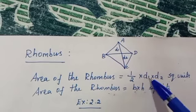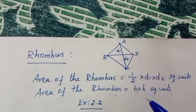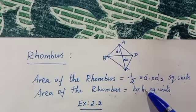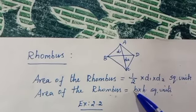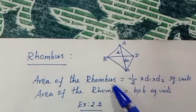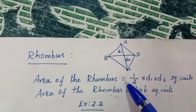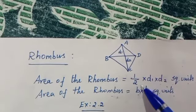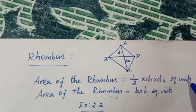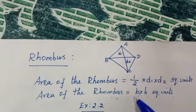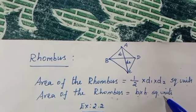When the diagonal values are given we have to use the first formula. When base and height are given we have to use the second formula. Area of the rhombus is equal to 1/2 into d1 into d2, or base into height square units.